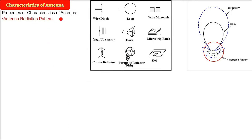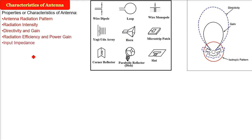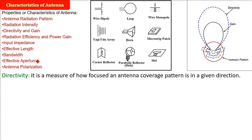Properties and characteristics of an antenna include the antenna radiation pattern, the radiation intensity, the directivity and gain, the radiation efficiency and power gain, the input impedance, the effective length, the bandwidth, the effective aperture, and the antenna polarization. Directivity is a measure of how focused an antenna's coverage pattern is in a given direction.